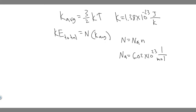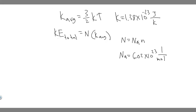In this problem we're told: what is the average translational kinetic energy of an oxygen molecule at STP? And part B is: what is the total translational kinetic energy of 1 mole of O2 molecules at 25 degrees Celsius? So we're going to be solving for two things. In the first part we're solving for the average translational kinetic energy, which we call K average, and the formula is 3/2 times K times T.